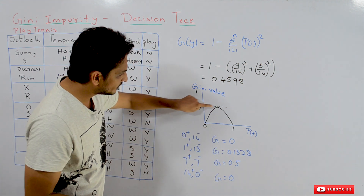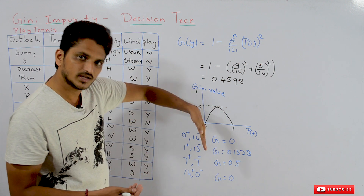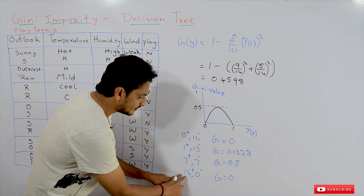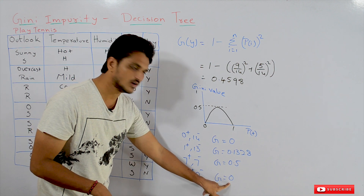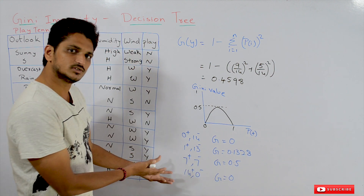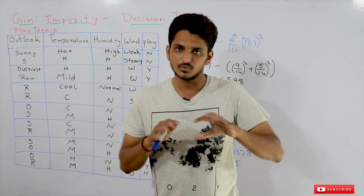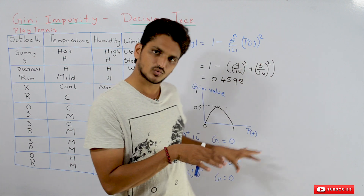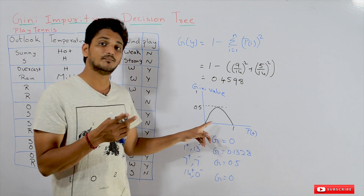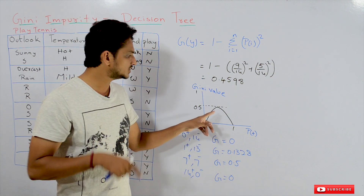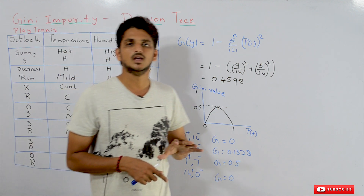From that point onwards, if you keep on increasing the positive data points, the Gini impurity value keeps on decreasing. If you are having 14 positive points and 0 negative points — all positive — the G value is 0 again. So this is working exactly the same as entropy. Entropy also does the same thing. The only difference is that in entropy the maximum value is 1, but in Gini impurity the maximum value is 0.5.